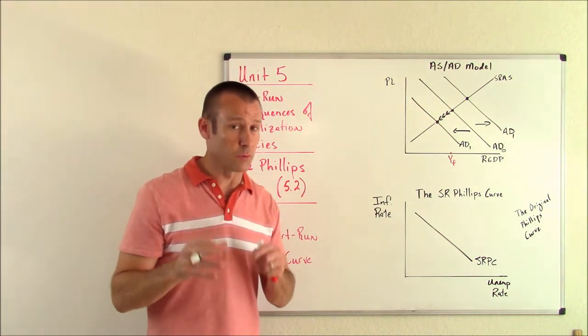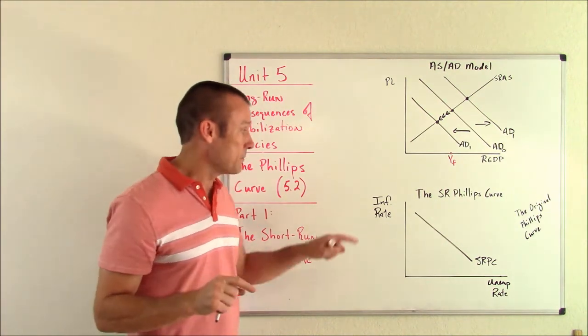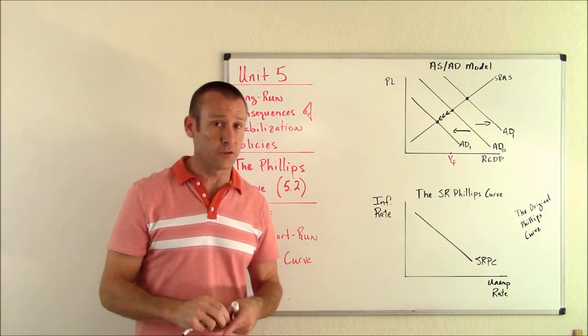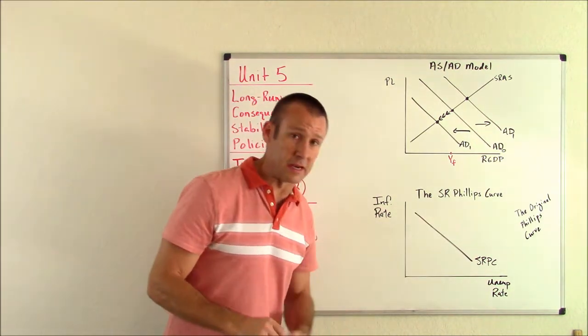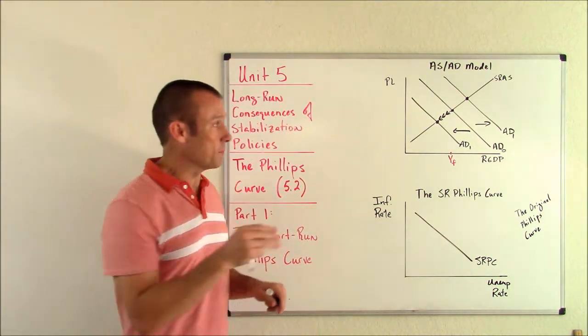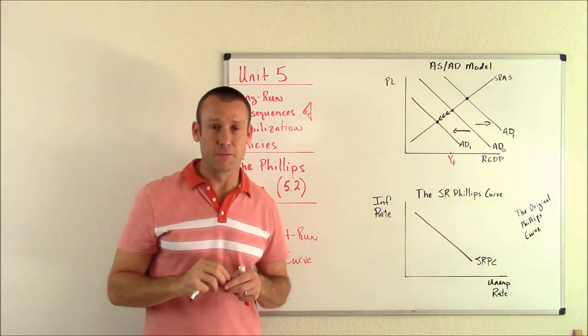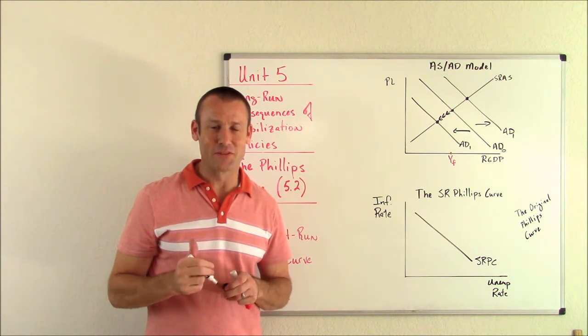Over time we got another curve coming in another video called the long run Phillips curve. But in the short run, if we ever get a question about the short run relationship between these two variables, the short run Phillips curve tells me that and shows me an inverse relationship, which we very much understand from our learning about the AS/AD model. Hope that made sense to you. We'll see you in the next video.